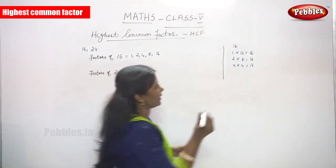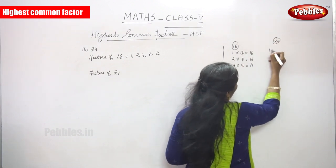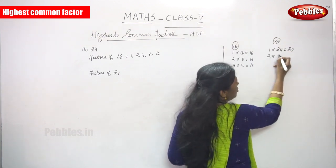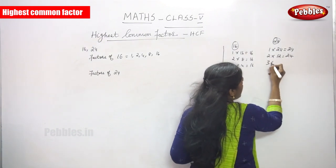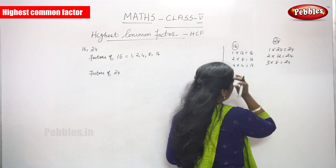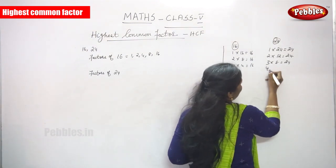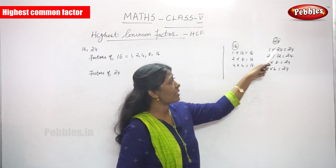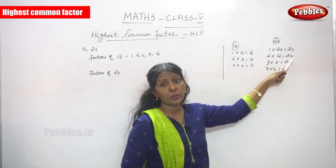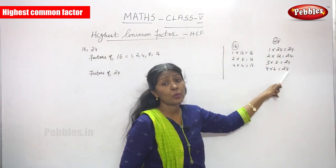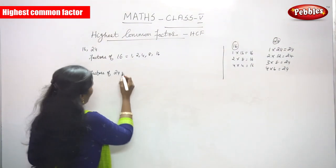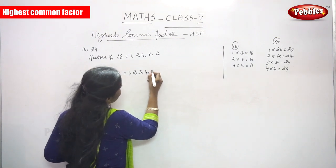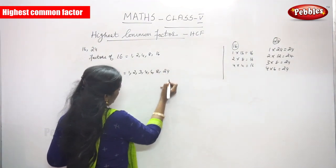Next, find the factors of 24. 1 × 24 = 24, 2 × 12 = 24, 3 × 8 = 24, and 4 × 6 = 24. So write the factors of 24: 1, 2, 3, 4, 6, 8, and 24.